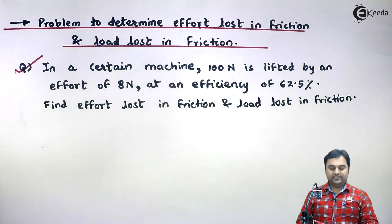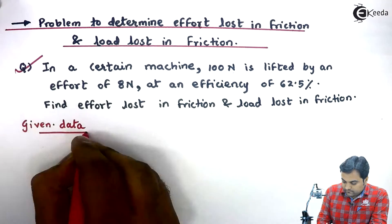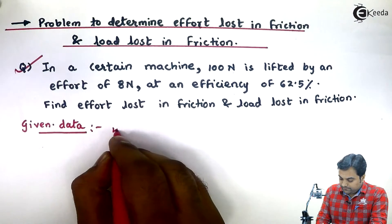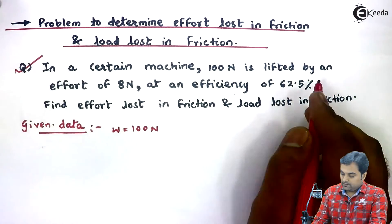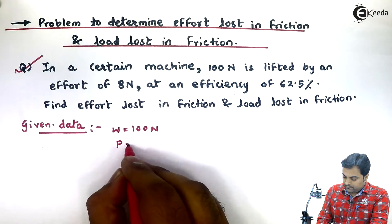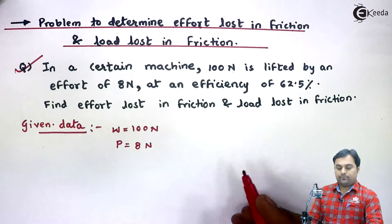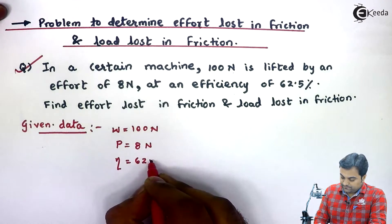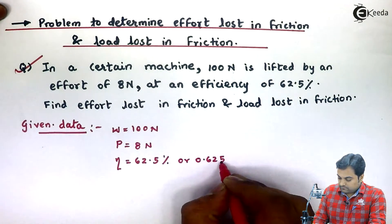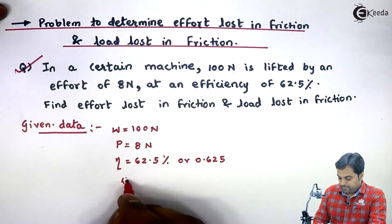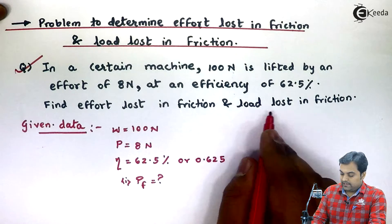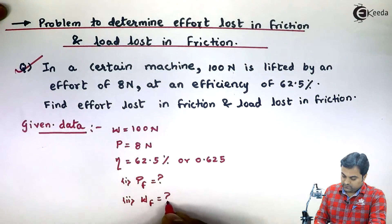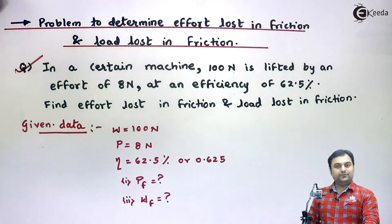Let's start with this problem. It is given that in a certain machine, 100 Newton is lifted — so 100 Newton is the load (W). Effort is denoted by P and is 8 Newton. Efficiency is given as 62.5 percent. We need to find: effort lost in friction, denoted P_F, and load lost in friction, denoted W_F.